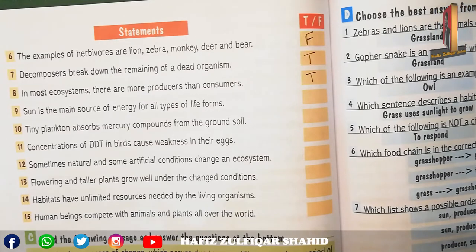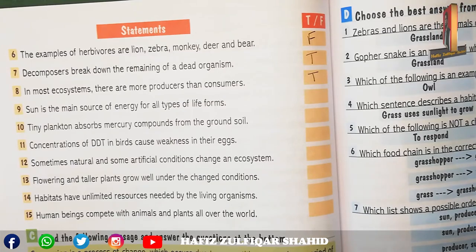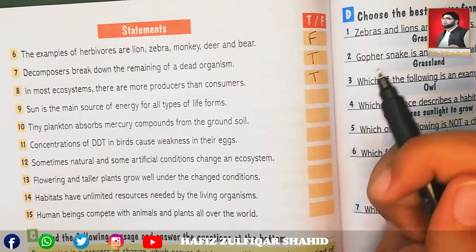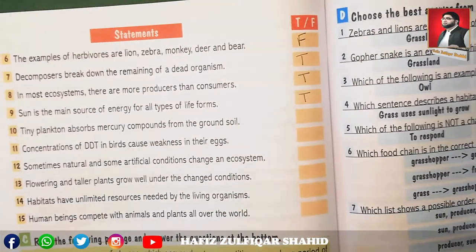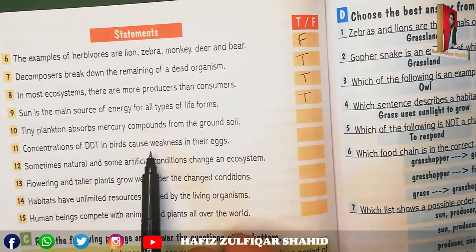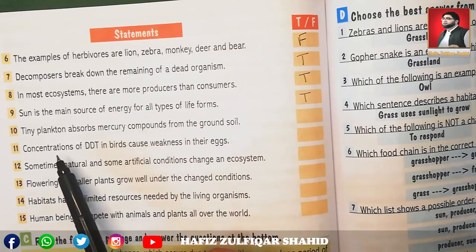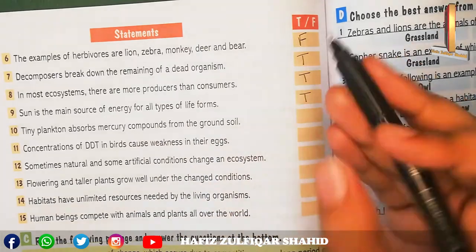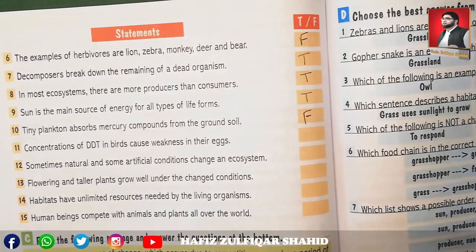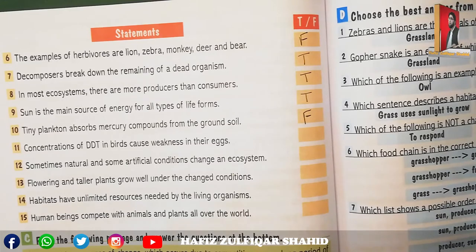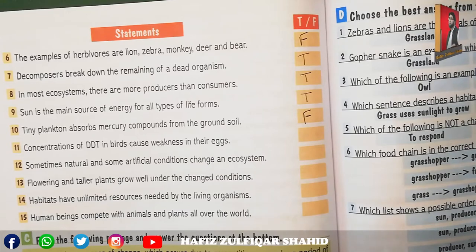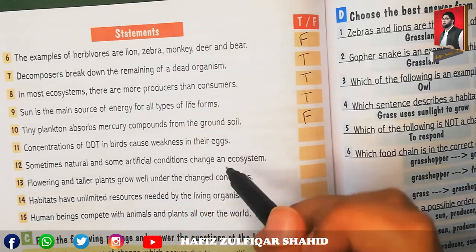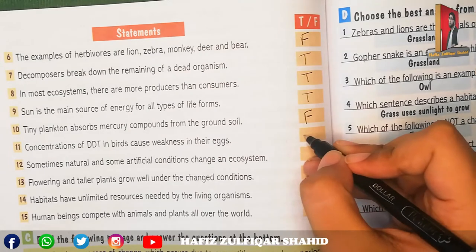Number nine: the Sun is the main source of energy for all types of life forms — true, the Sun is the most important basic energy source for all living things. Number ten: tiny plankton absorb mercury compounds from the ground soil — this is false; plankton absorb mercury from sea water, as they are water-living organisms found in water bodies.